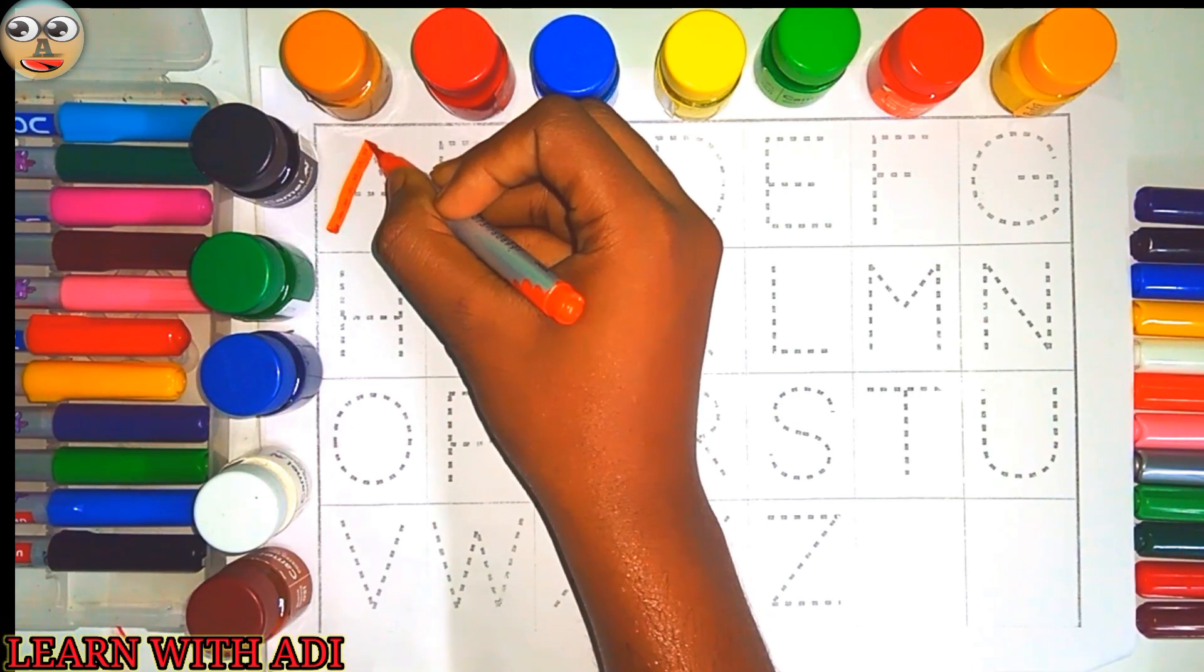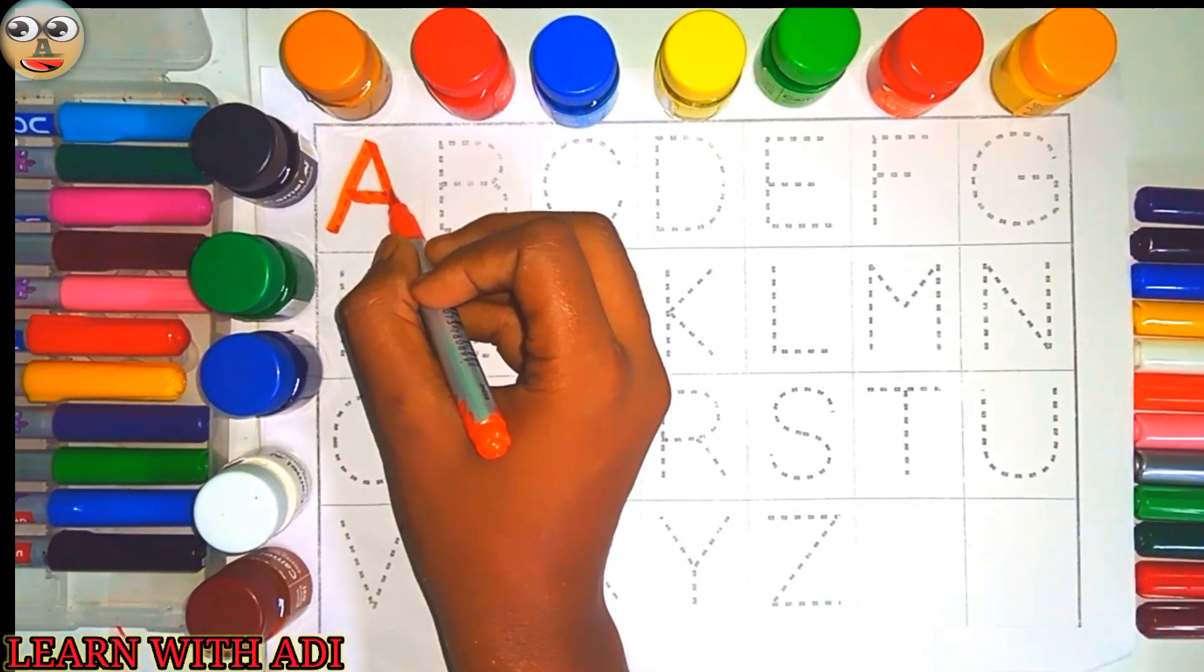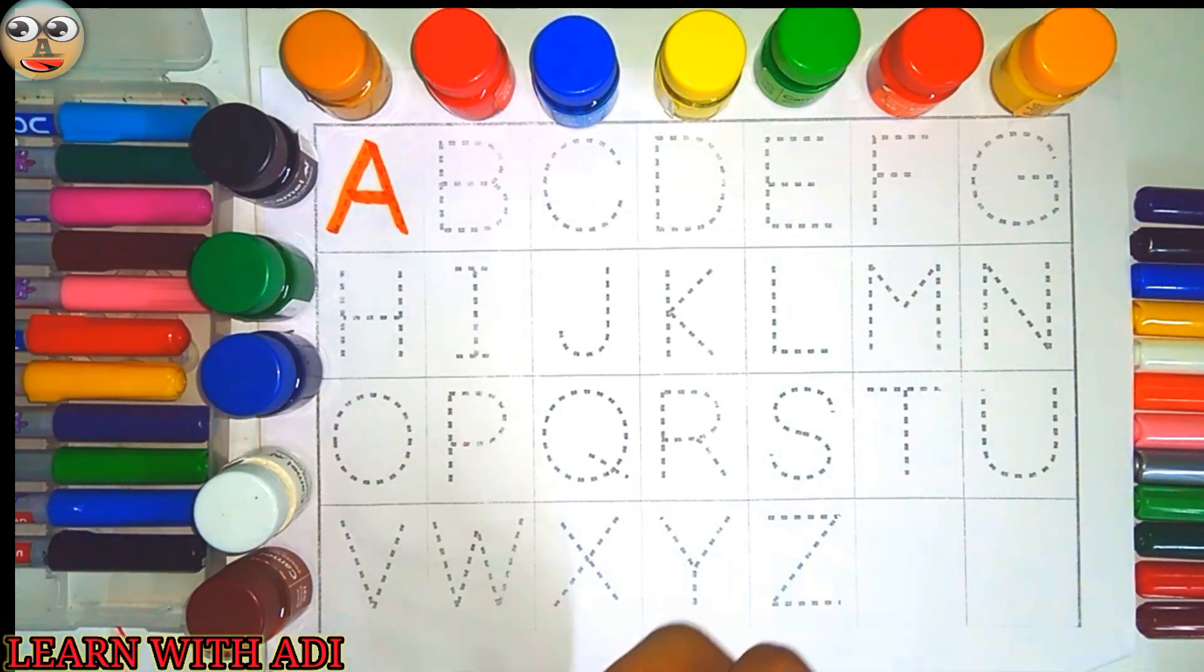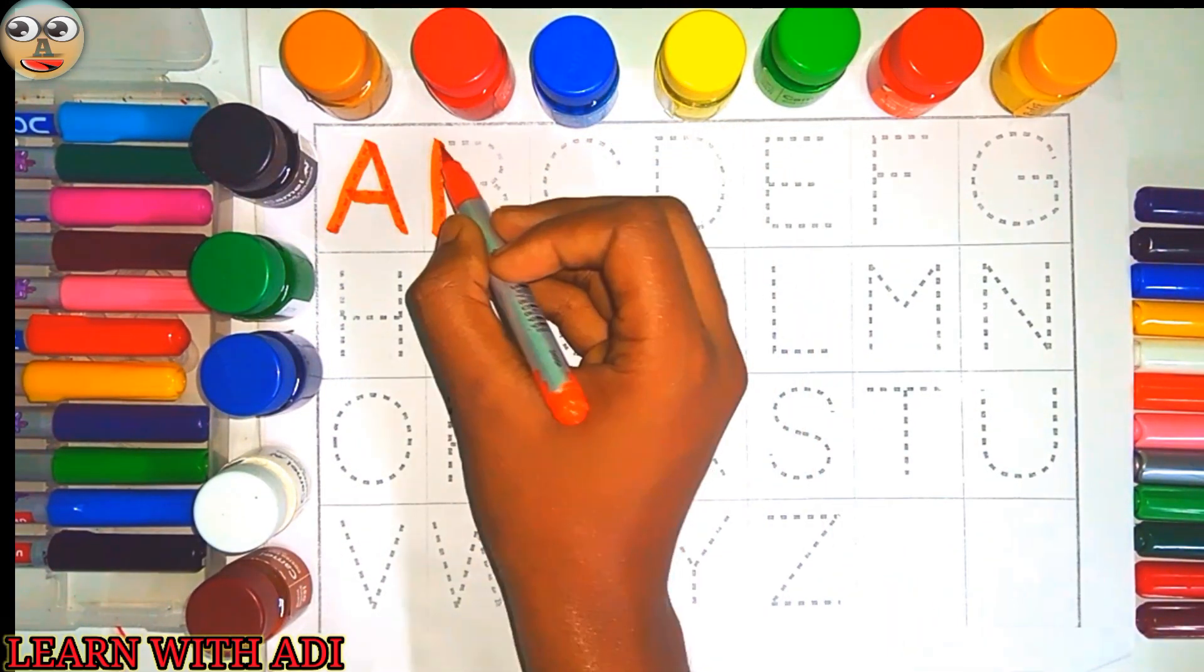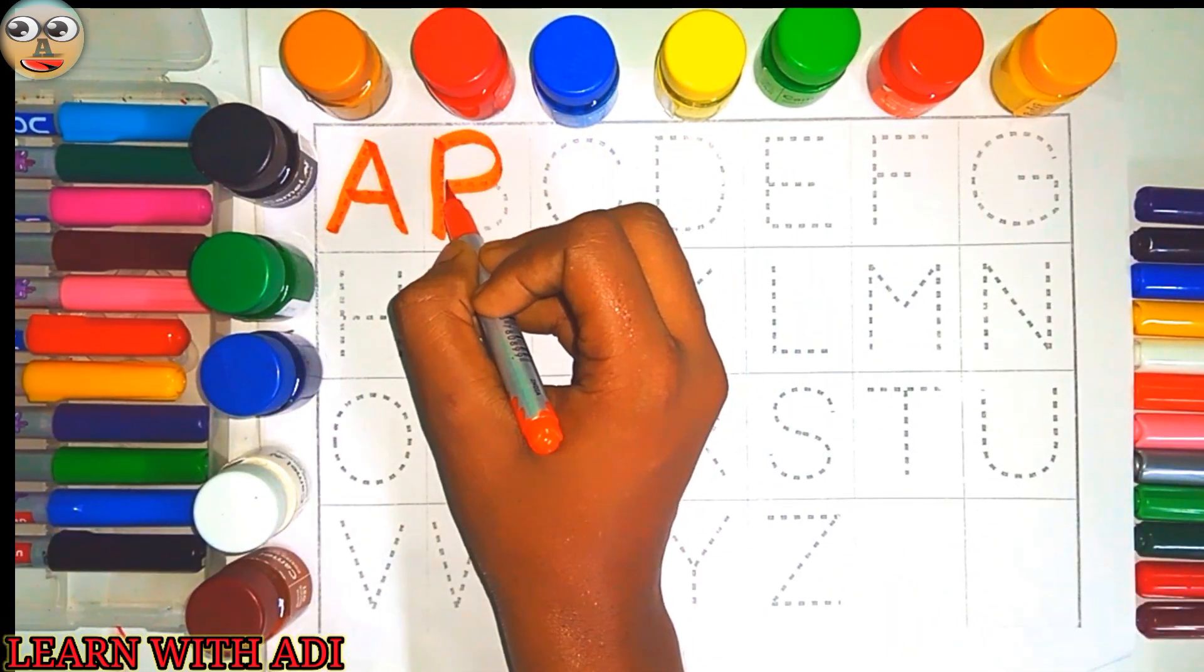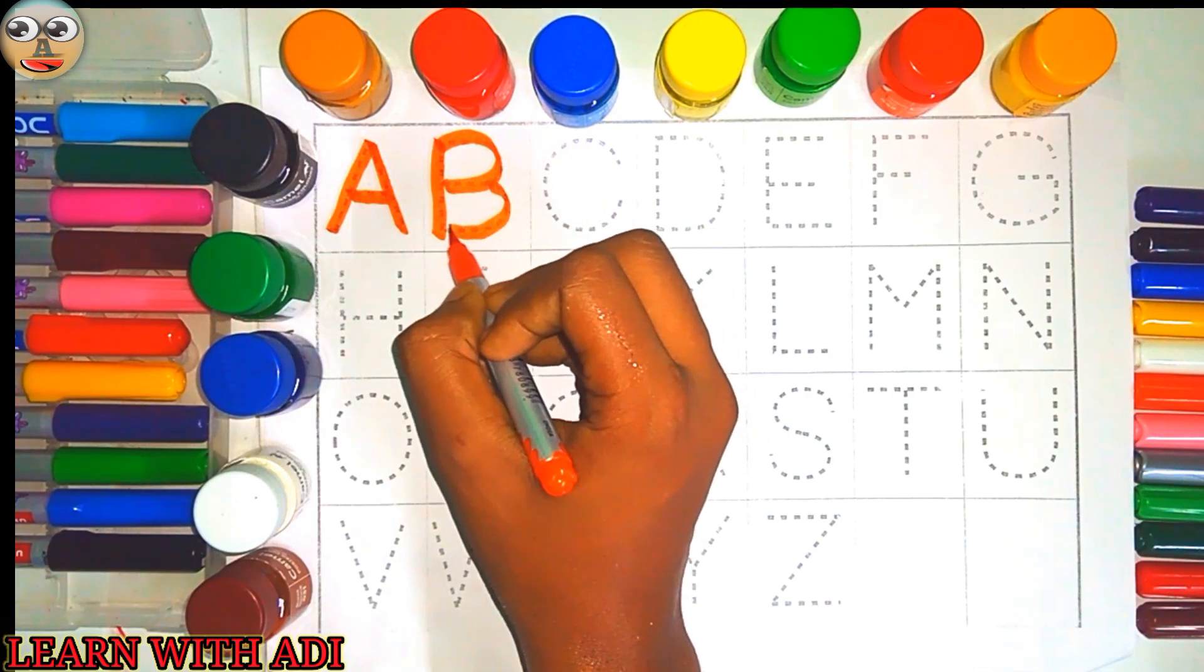A, A for apple, A for ant. B, B for ball, B for bat.